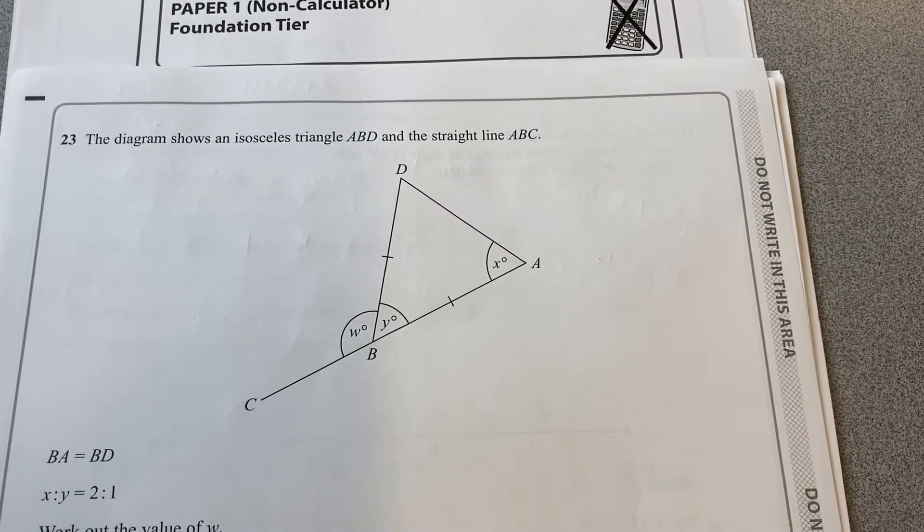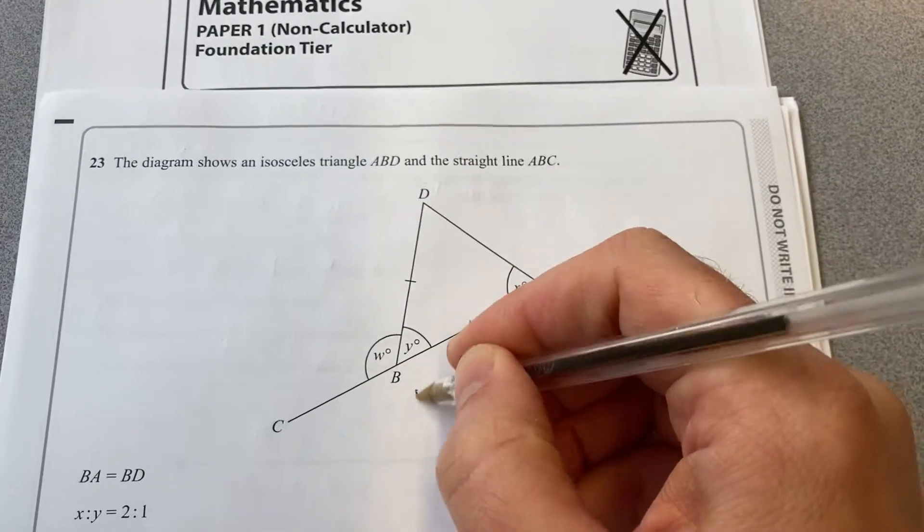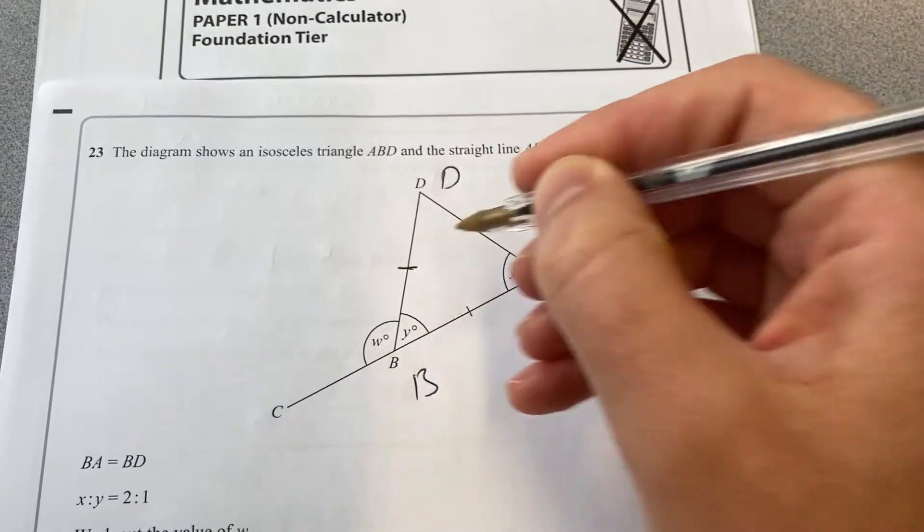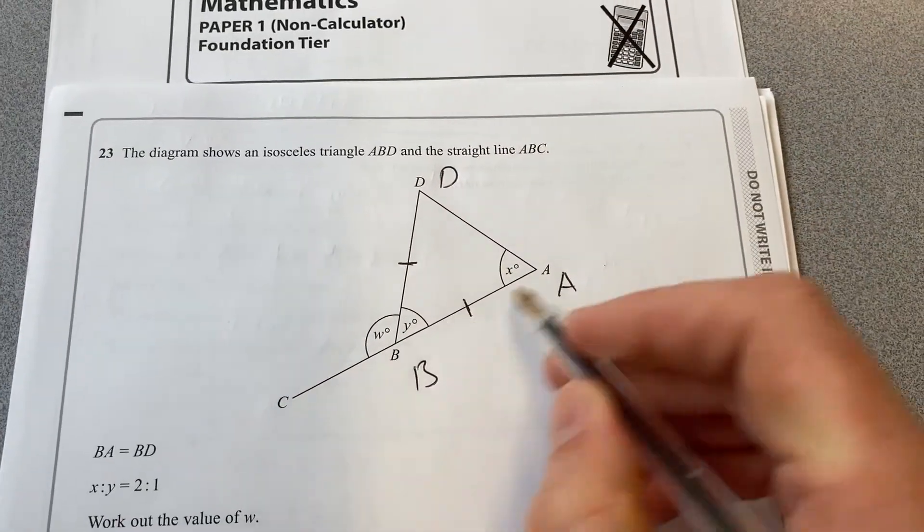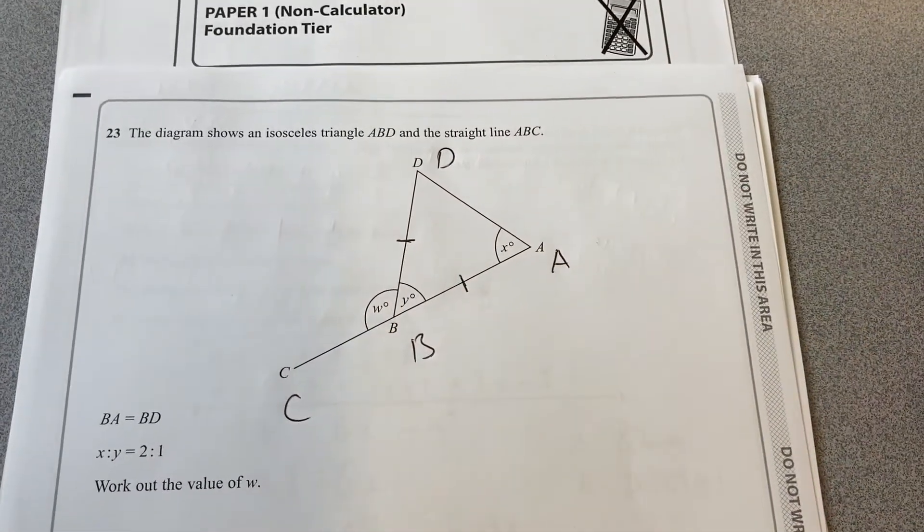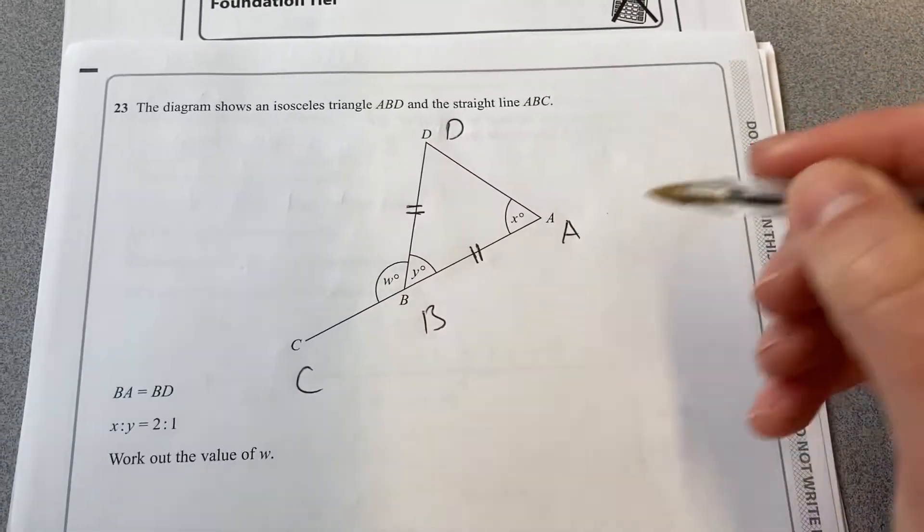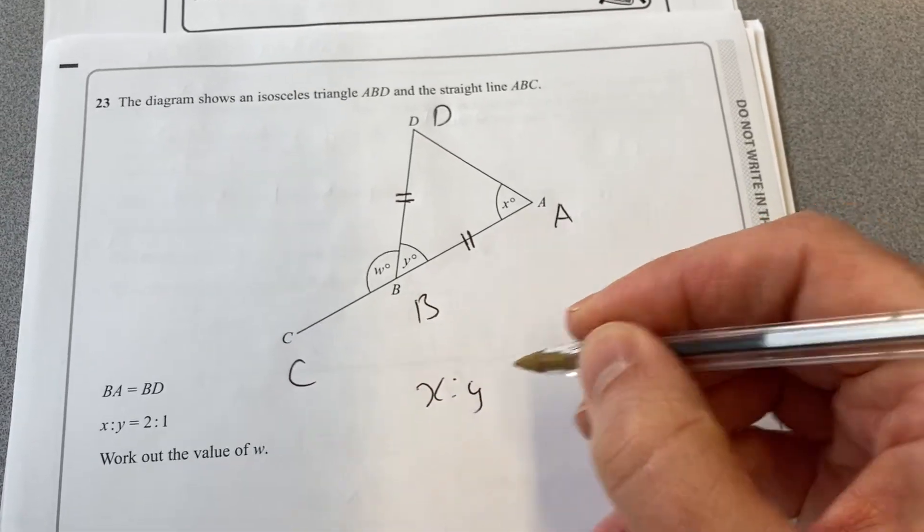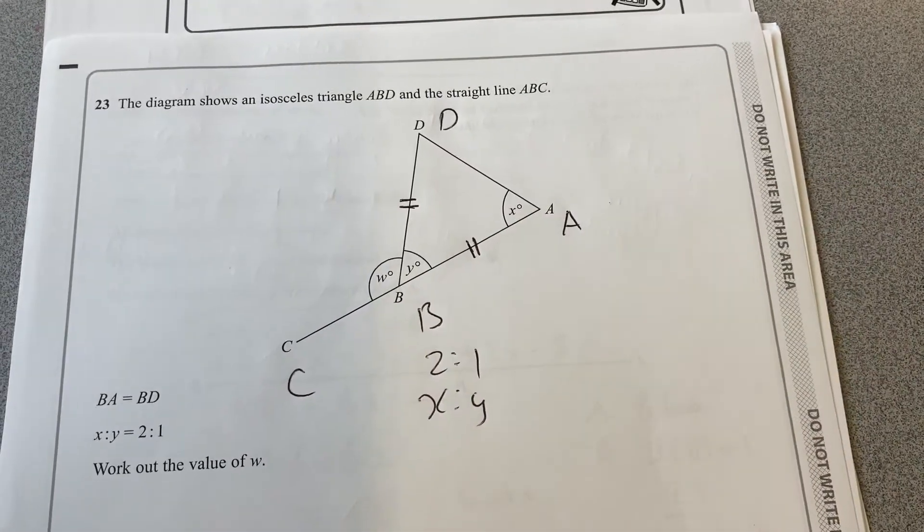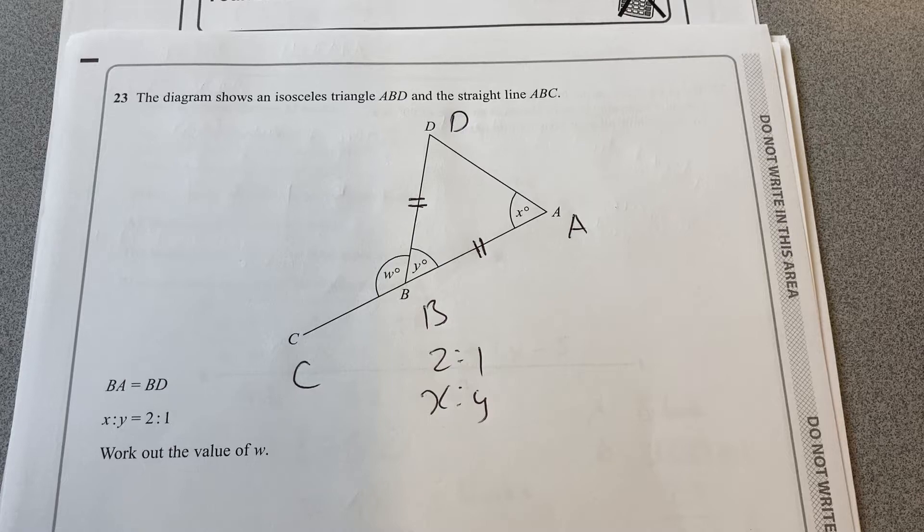Diagram shows an isosceles triangle ABD, isosceles because of those marks there, and the straight line ABC. Now BA equals BD, that's what makes it isosceles, and X to Y is the same ratio as 2 to 1, so X is double Y.